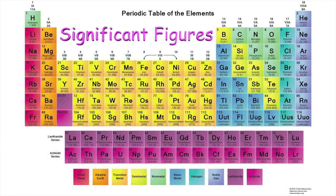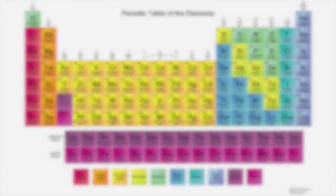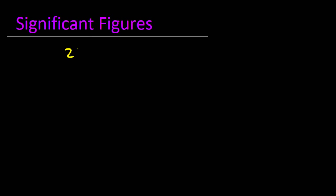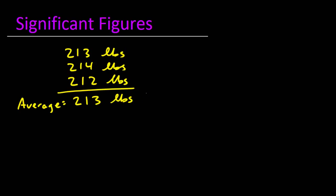This is an introduction to significant figures. Let's start by looking at some measurements made by stepping onto a scale three different times. We arrive at 213 pounds, 214 pounds, and 212 pounds. If we were to calculate the average of these values, we wind up with 213 pounds.